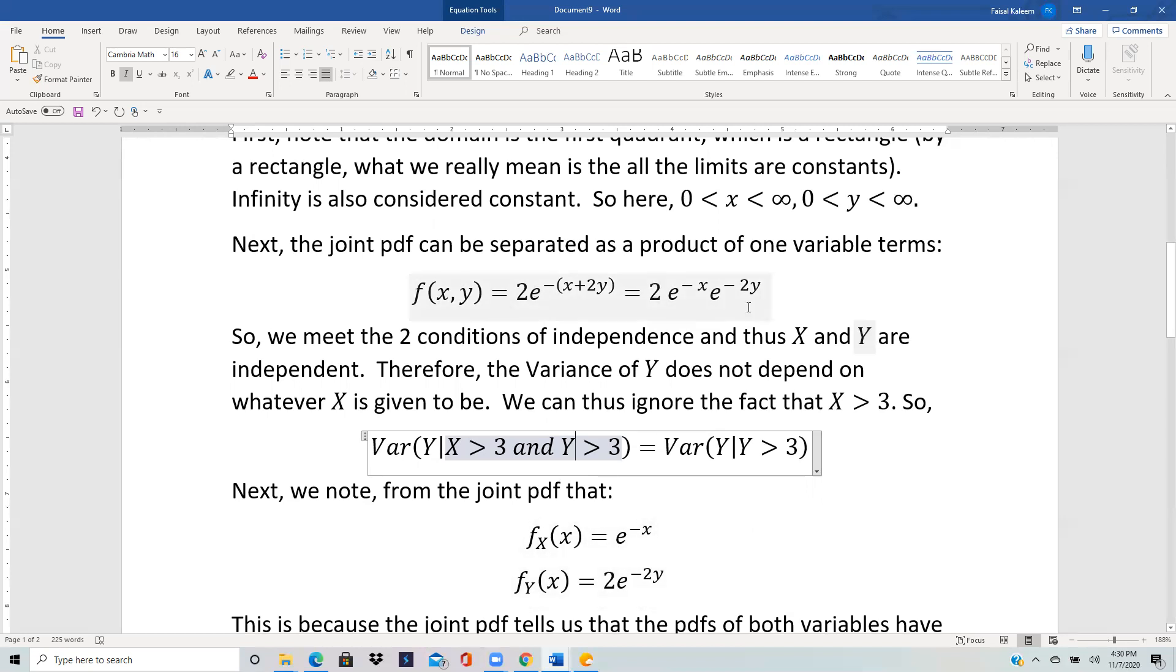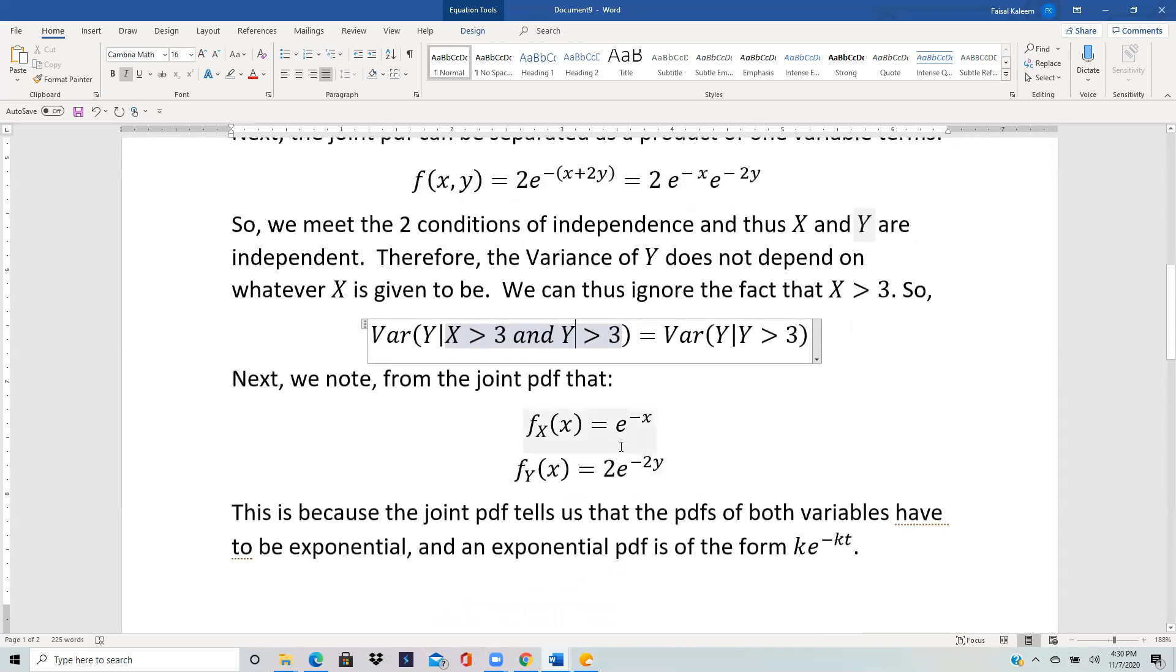These two multiply to give you the joint product and the reason why it has to be like this is that we can see that both x and y have to be exponential and an exponential pdf is of this form ke^(-kt). Sometimes we write it as (1/k)e^(-t/k) to stress that k is the mean but the point is that whatever you have with the t, ignoring the negative you have to have the same coefficient besides the t.